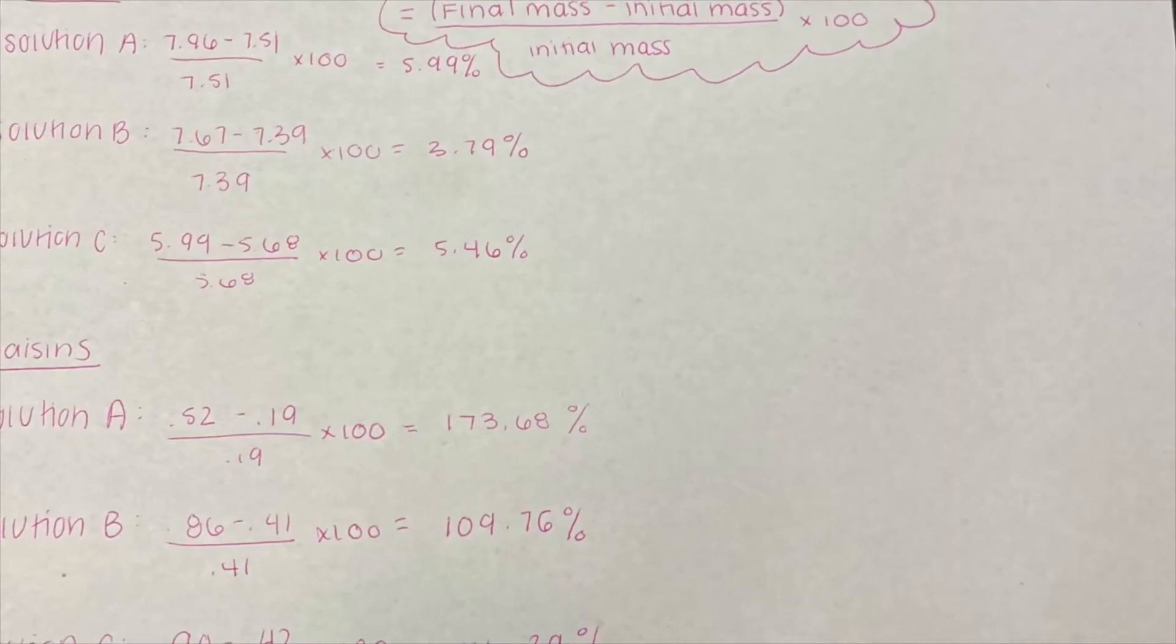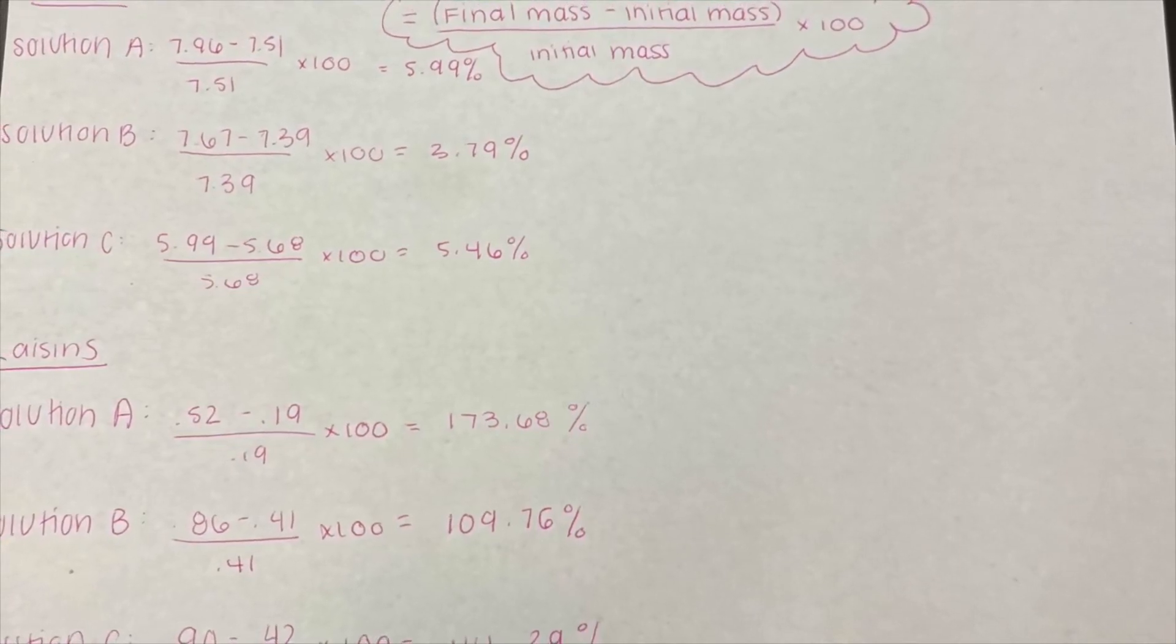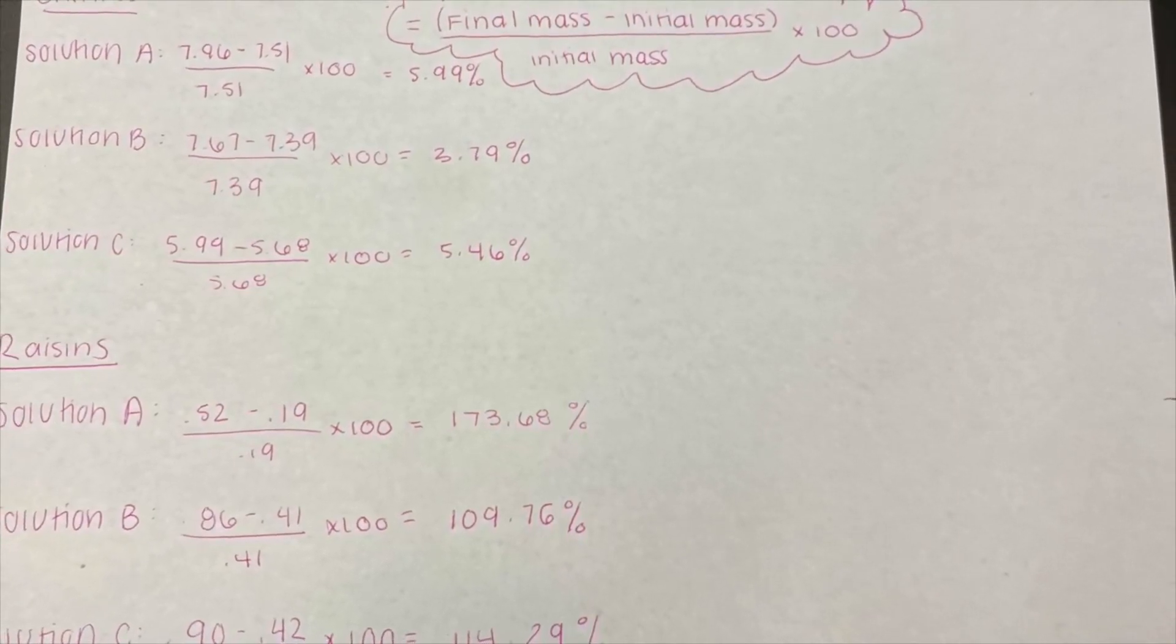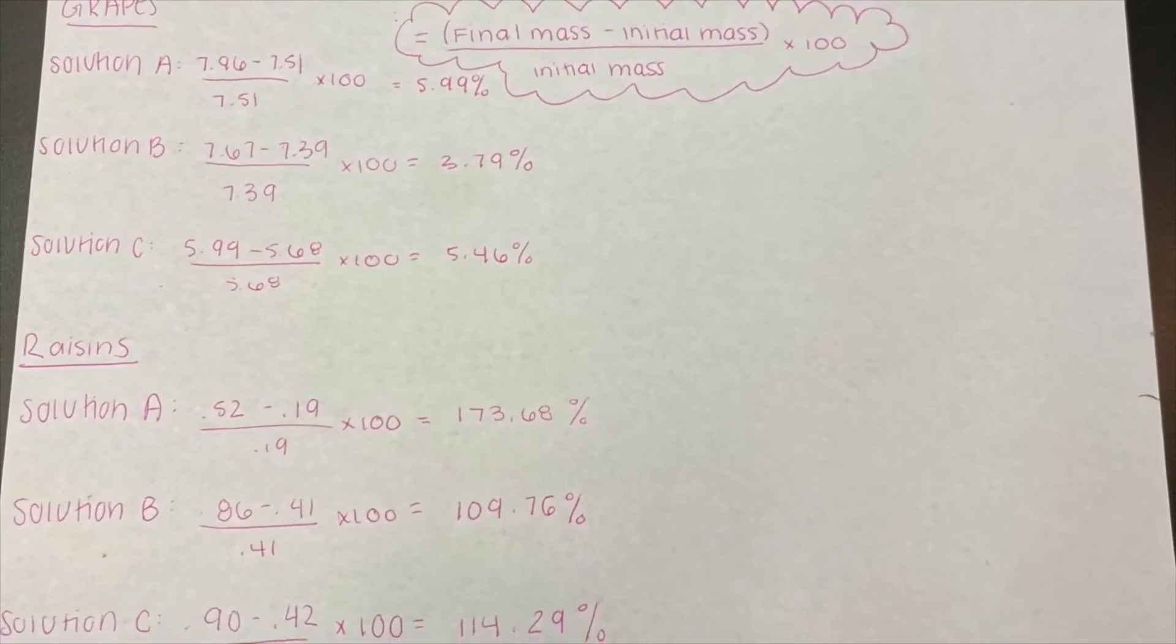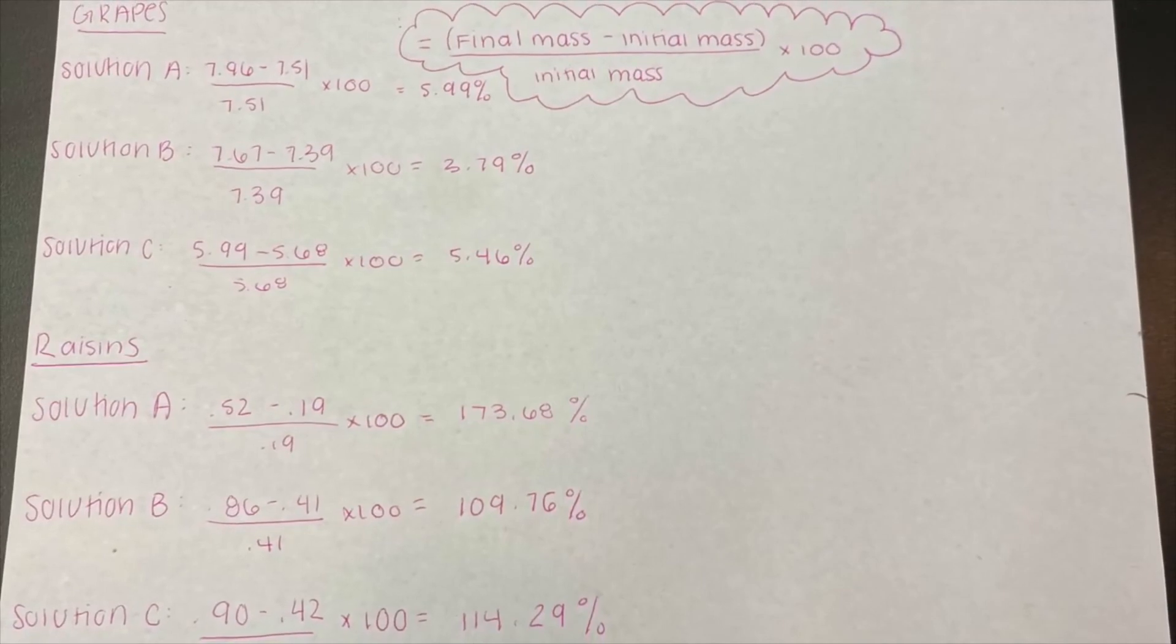Next, you will find the percent change. This is the percent in which the grapes and raisins grew or shrunk. You find this by taking the final mass and subtracting by the initial mass, then divide by the initial mass and multiply the entire thing by 100.